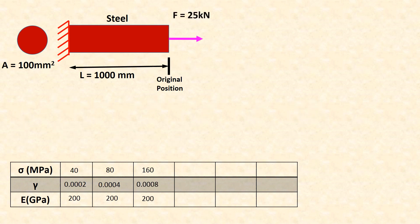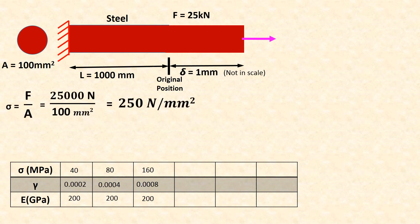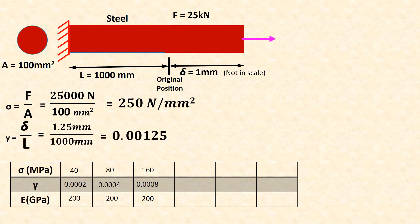Force changed to 25 kN: delta equals 1 mm, proportionally increased. Sigma equals 250 MPa, gamma equals 0.00125, E equals 200 GPa — same value.